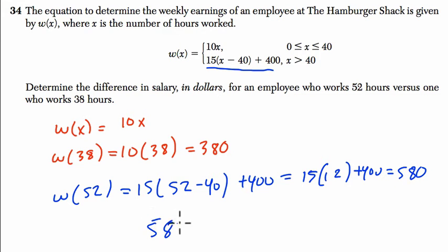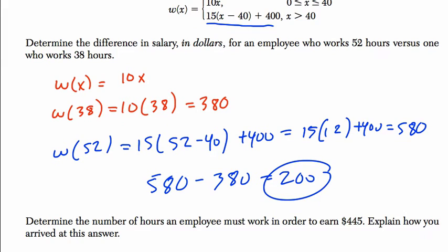So 580 minus 380 is $200. That's the difference between the two employees. Determine the number of hours an employee must work in order to earn $445. Explain how you arrived at this answer.